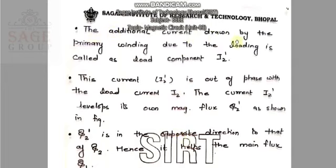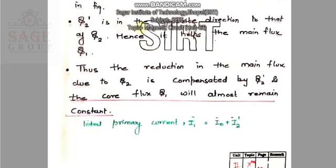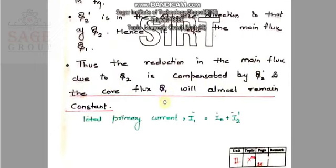So, the additional current drawn by the primary winding due to the loading is called as load component, which is denoted by I2 dash. And this I2 dash is out of phase with the load current I2. The current I2 dash develops its own magnetic flux Phi2 dash as shown in the figure. Now, this I2 dash is in the opposite direction to that of Phi2. Hence, it helps the main flux Phi1. Thus, the reduction in the main flux due to Phi2 is compensated by Phi2 dash and the core flux Phi1 will almost remain constant.